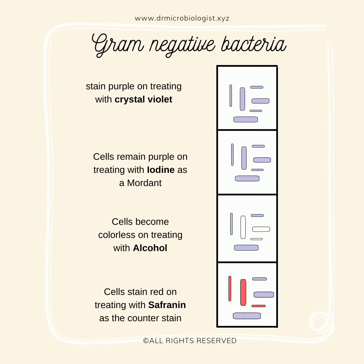In the gram staining procedure, they stain red. In the gram staining process, in the first step we treat the cells with crystal violet — this is the primary stain. In the second step, we treat the cells with iodine, which acts as a mordant. In the third step, the cells are treated with alcohol, which acts as a decolorizer.